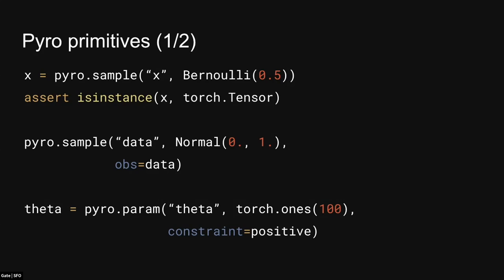The next statement is actually an observed statement. It looks like a sample statement, but we have an obs argument, so we're pinning this particular result of a distribution to some observed data. If I have learnable parameters in that distribution, I could fit those parameters to match the observed data. The third statement is a param statement — that's how we register a parameter as learnable in Pyro. Here we register it with a name and an initial value, and we can optionally constrain this parameter. That constraint object is actually a PyTorch distributions constraint object that lives in the PyTorch constraints library upstream.